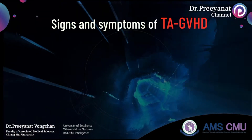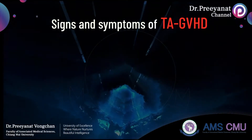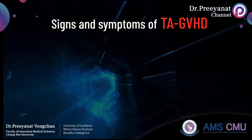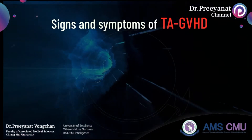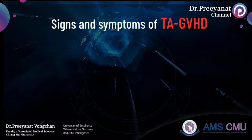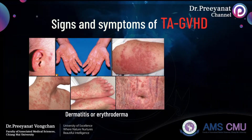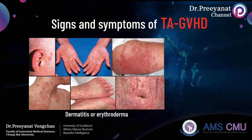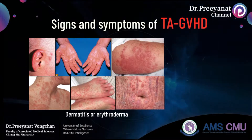Signs and symptoms of transfusion-associated graft-versus-host disease result from systemic destruction of patient cells in tissues and organs expressing HLA. Manifestations occur within 10 to 12 days after transfusion, including fever, dermatitis or erythroderma, often starting from palms, soles, earlobes, and face, with additional findings ranging from edema to widespread blistering.